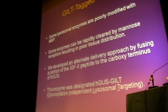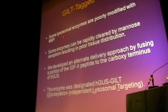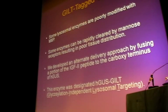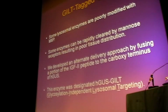The first alternate strategy I'm going to talk about is what we call our GILT-tagged GUS. We know that some lysosomal enzymes are poorly modified with mannose-6-phosphate, and some enzymes can be rapidly cleared by mannose receptors, resulting in poor tissue distribution. So we developed an alternate delivery approach by fusing a portion of the IGF-2 peptide to the carboxy-terminus of H-GUS.